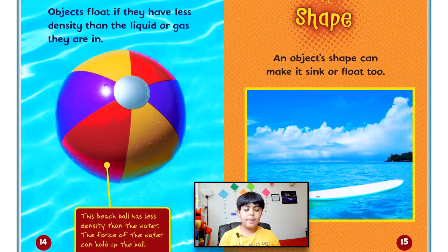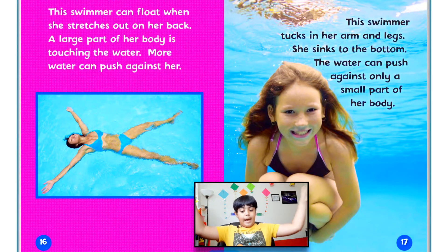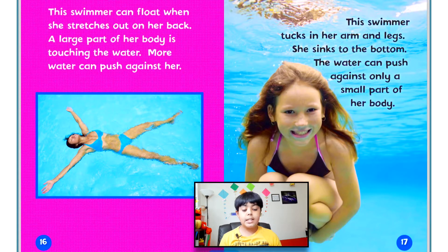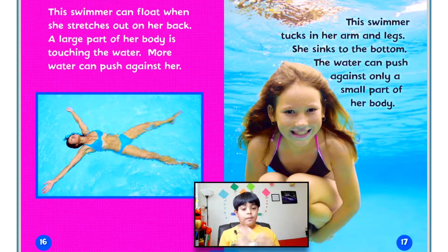An object's shape can make it sink or float too. The swimmer can float when she stretches out on her back — a large part of her body is touching the water, so more water can push against her. This swimmer tucks in her arms and legs and sinks to the bottom. The water can push against only a small part of her body, so she sinks all the way to the bottom.